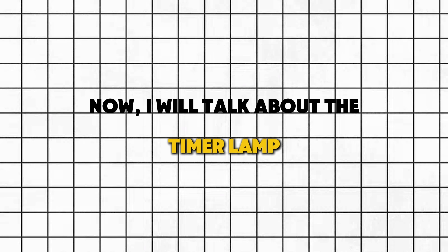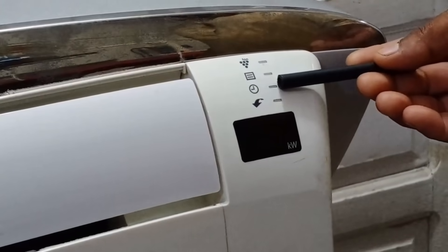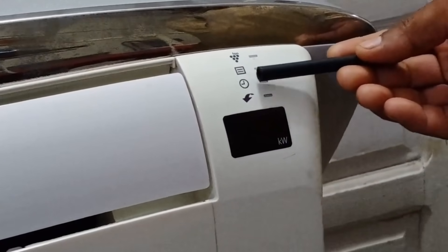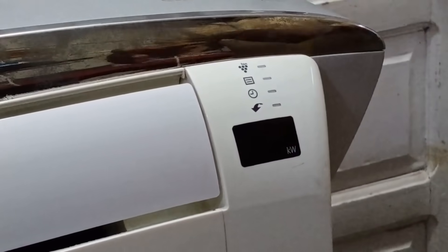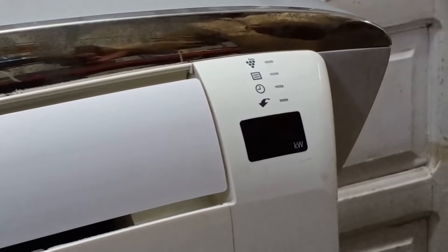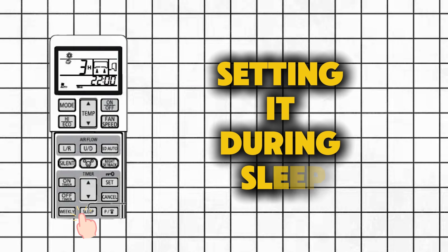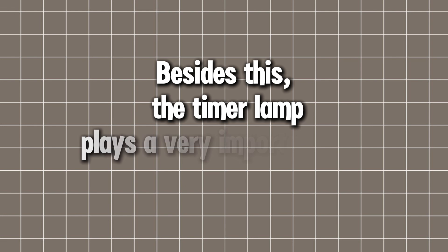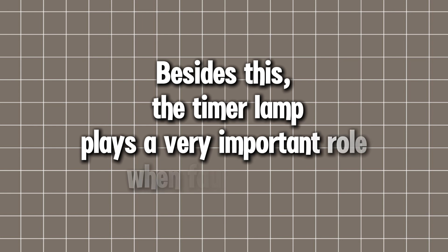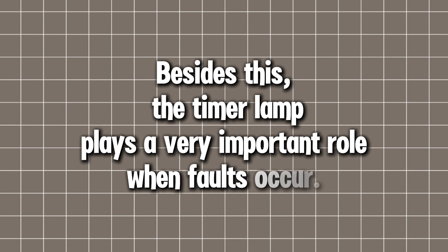Now I will talk about the timer lamp. When the timer lamp is on, it means you can use the unit as a timer, which is especially useful for setting it during sleep. Besides this, the timer lamp plays a very important role when faults occur.